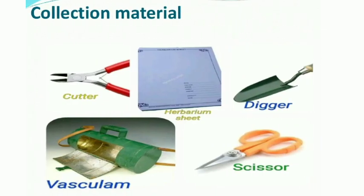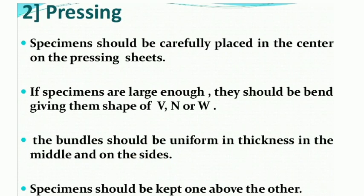Collection can be done using a cutter, digger, scissor, and vasculum. Vasculum is used to carry the plant from the field to the laboratory. A digger is used to uproot a herb or small plant, or if there is any modified root. Cutter and scissor are used to remove additional branches, leaves, or fruits.